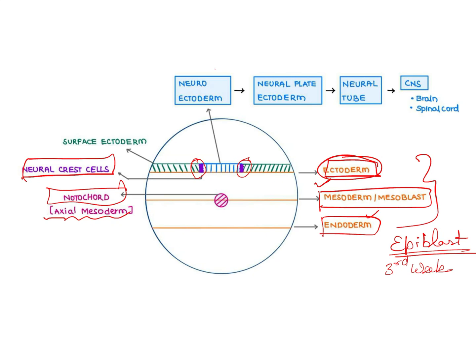There are certain other cells known as the neuroectoderm, and these neuroectoderms generally form the neural plate, neural tube, and then finally give rise to the CNS: brain and spinal cord.